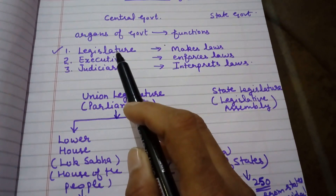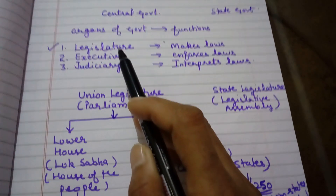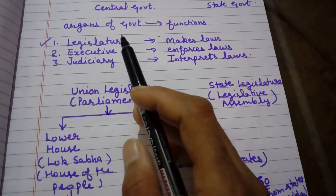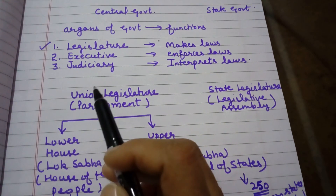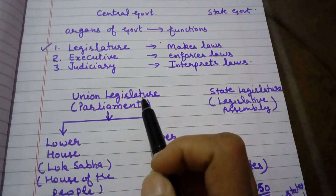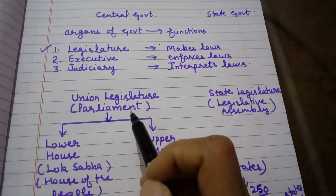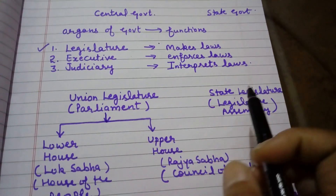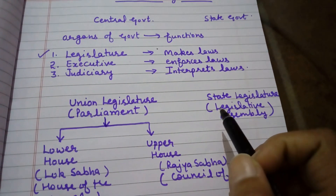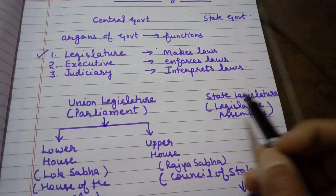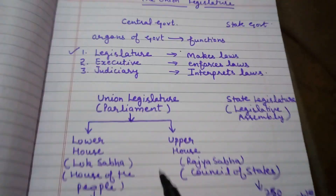In this chapter we will study about the Union Legislature. Legislature at the center level is known as Union Legislature and it is also called Parliament. Legislature at the state level is known as State Legislature, also called Legislative Assembly.